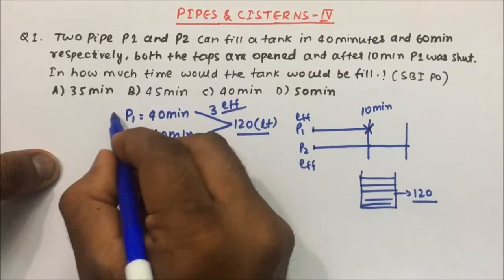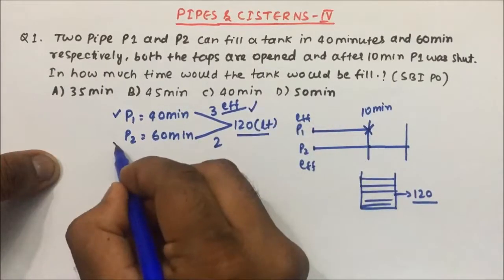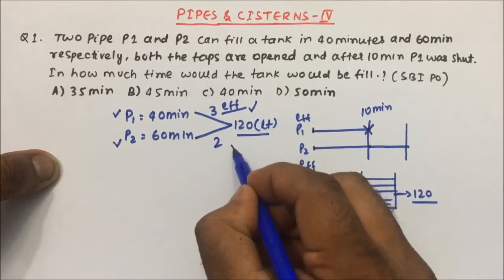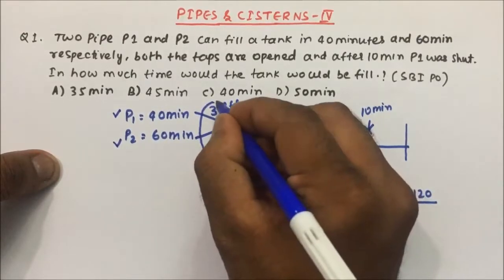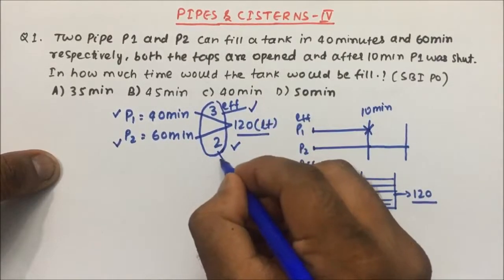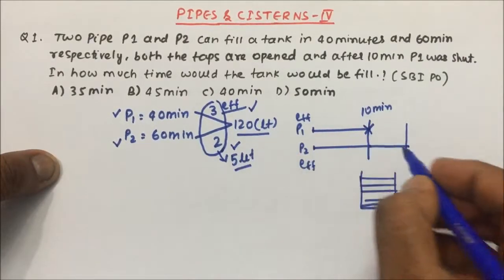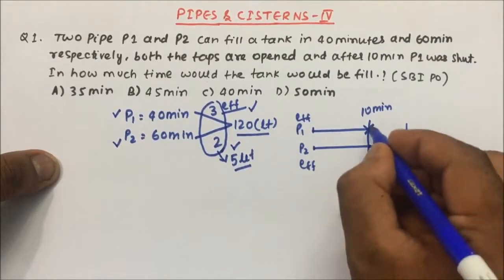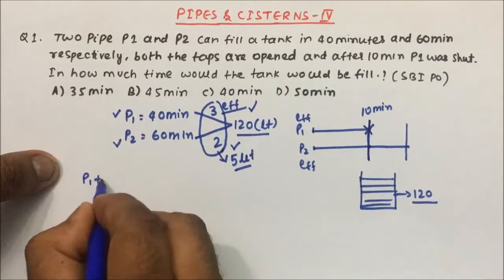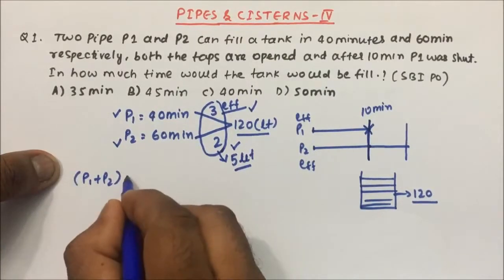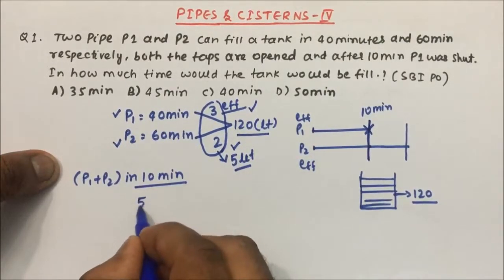That gives us our efficiency. P1 can fill 3 liters of water in 1 minute, and P2 can fill 2 liters of water in 1 minute. Together, if P1 and P2 are open, they can fill 5 liters of water in 1 minute. P1 and P2 were open for 10 minutes.